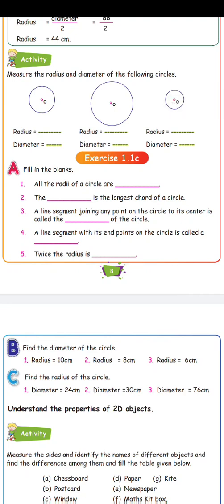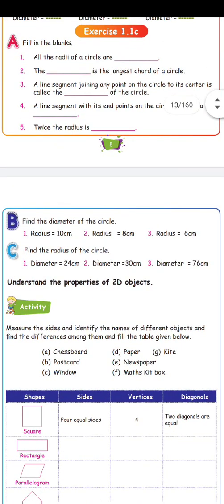Next activity: measure the radius and the diameter of the following circles. You can measure the scale of the diameter. The radius doubled gives the diameter. For example, in the first circle, if the radius is 1, then the diameter is 2. If you measure from the center dot to the edge, you measure the radius. All radii of a circle are equal.